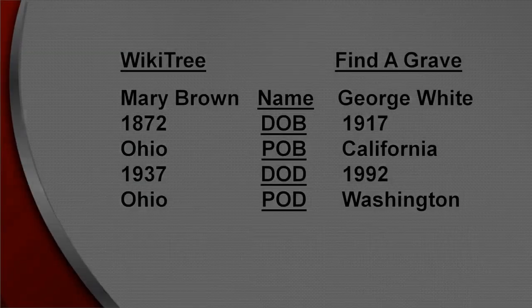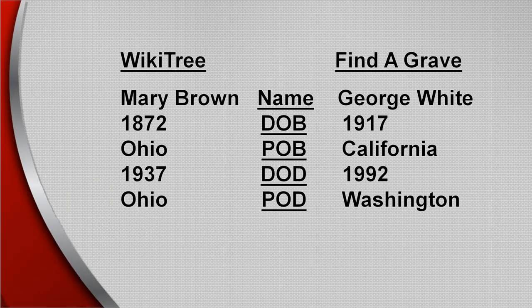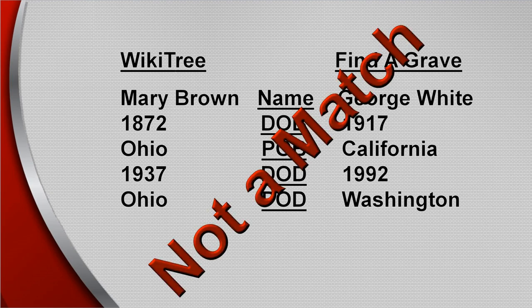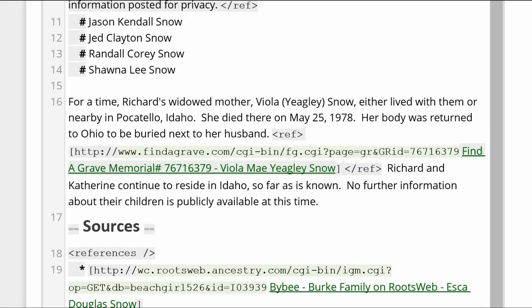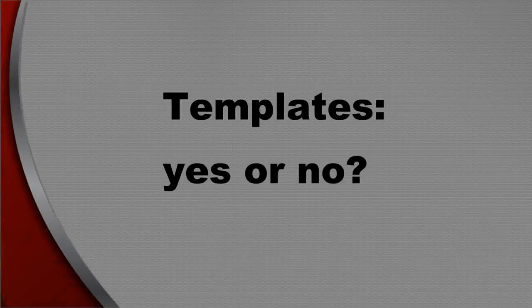If this process of statistics fails to determine that the link belongs to the profile, it is assumed to be an incorrect match. That could be due to a typo which links to the wrong grave, or the memorial belongs to a relative, which leads us to templates.